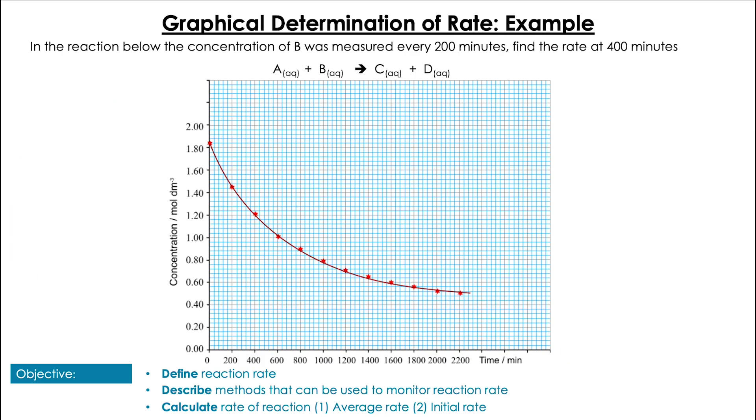Let's take a look at an example. In this question, it asks us to find the rate at 400 minutes. It's given as a graph of concentration over time with a curve. Here we're going to be finding an instantaneous rate at 400 minutes. We can see the time on the x-axis is in minutes. First of all, find 400 minutes and draw a tangent at that point that just touches the line at the 400 minute mark.